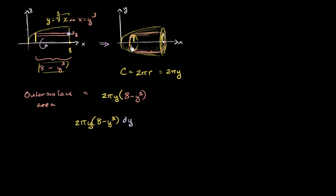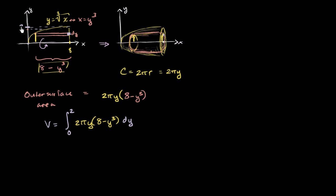To find the volume of the entire solid of revolution, we sum all of these shells and take the limit as they become infinitely thin. We're integrating with respect to y, so what's our interval? y starts at 0, and when x is equal to 8, y equals the cube root of 8 which is 2. So y goes from 0 to 2, and we've set up our integral. This one looks pretty straightforward.